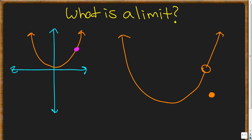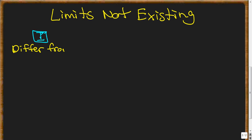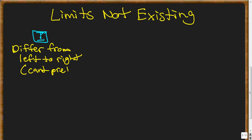Most of the time limits exist and are easily predicted. But there are times when limits don't exist, and there are mainly three cases you will see. Case one: the left and right limits differ — so you can't predict the value.